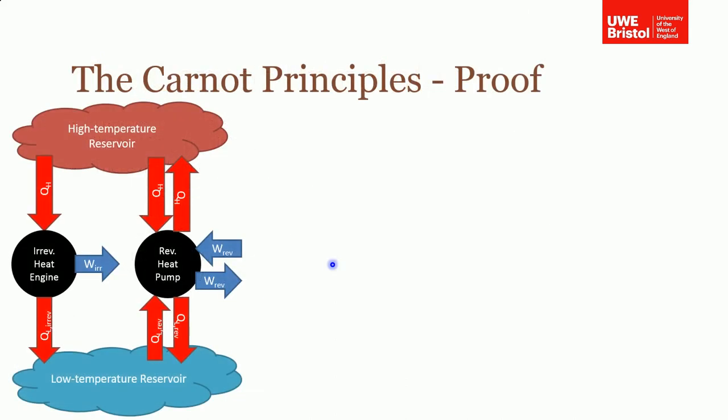Like we did earlier with a proof by contradiction, we can do that again here. So what we're going to say is we got an irreversible heat engine on the left. So this will take heat, it will do some work and that work is irreversible, and it will reject some heat to the low temperature as well, and that is also irreversible.